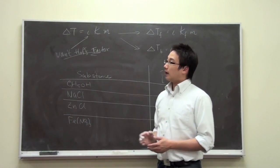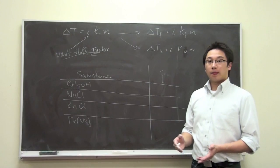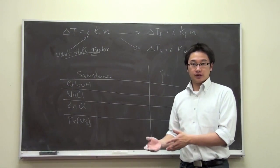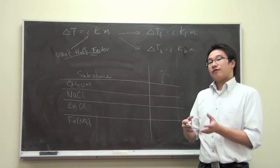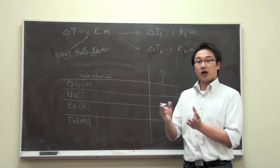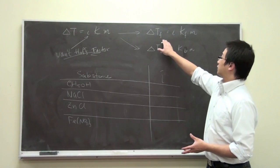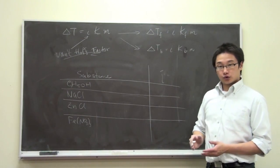This is the equation that we use to calculate the change of temperature or deviation from the freezing point or boiling point. If we want to specify the change of the freezing point or the change of the boiling point, we can simply put subscripts into the change of temperature.